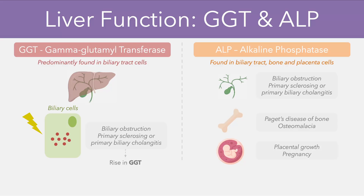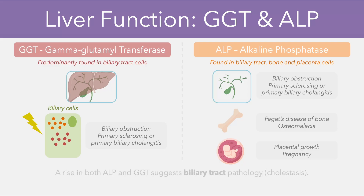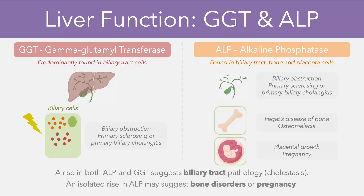You might have noticed that there is one degree of overlap between both enzymes — they're both found within the biliary tract system, meaning the biliary tract cells contain both GGT and ALP. If we therefore get a rise in both GGT and ALP, it's highly suggestive of a biliary tract pathology, or cholestasis, whereas if we only have a rise in our ALP value, it's more suggestive of bone disorders or pregnancy instead.